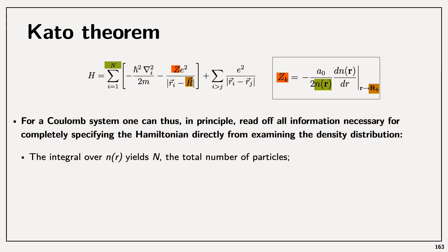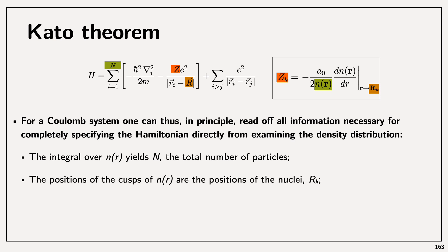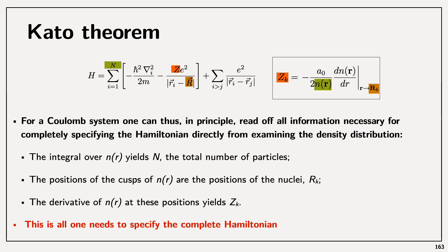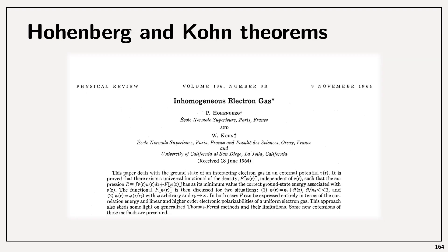This is all we need to specify the complete Hamiltonian. I actually got this from one of the references I provided on lecture zero and I find this quite useful because it provides context before the Hohenberg-Kohn theorem for density functional theory. Speaking of the Hohenberg-Kohn theorem, we are going to tackle that in the second part of this screencast. The famous paper was in 1964 from Hohenberg and Kohn.